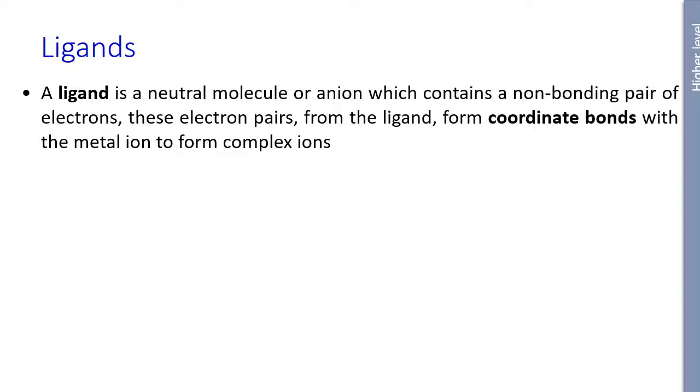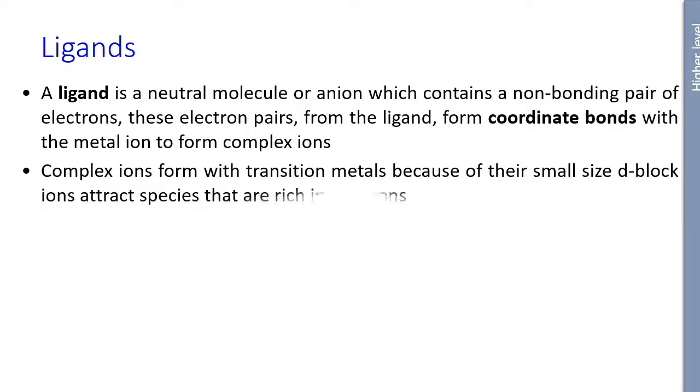So looking at these ligands a bit more detail, a ligand is a neutral molecule or anion, so a neutral molecule like ammonia, or an anion like chloride, which contains a non-bonding pair of electrons, and these electron pairs from the ligand form a coordinate bond with the central metal ion. And it's forming the complex ions. And complex ions form with transition metals because the size of the D-block is so small, and it attracts species that are rich in electrons.